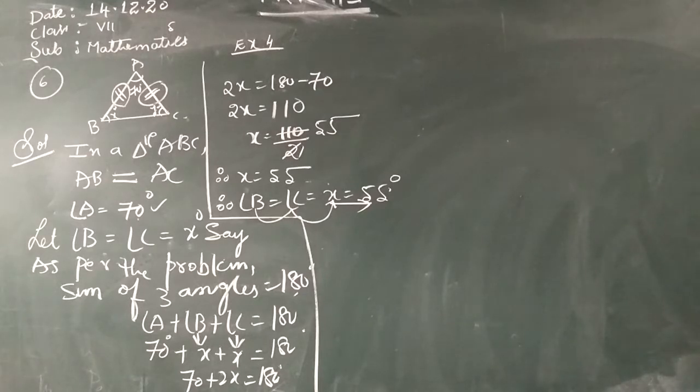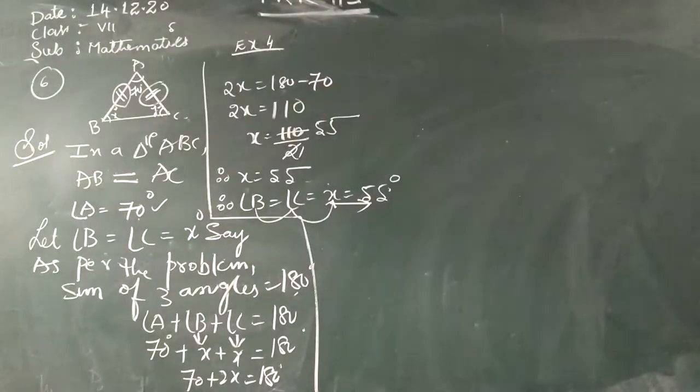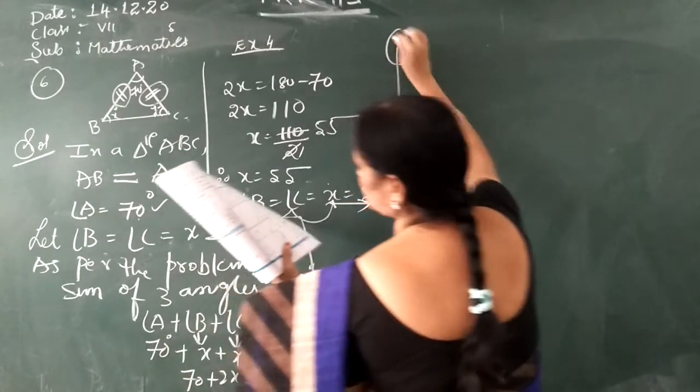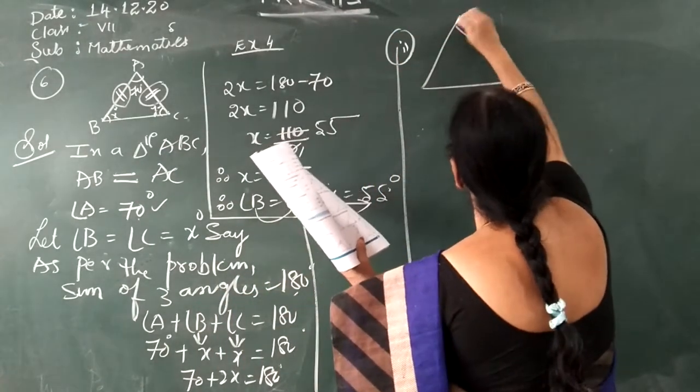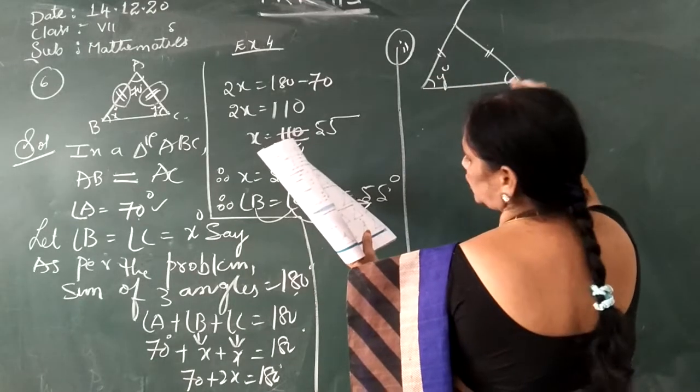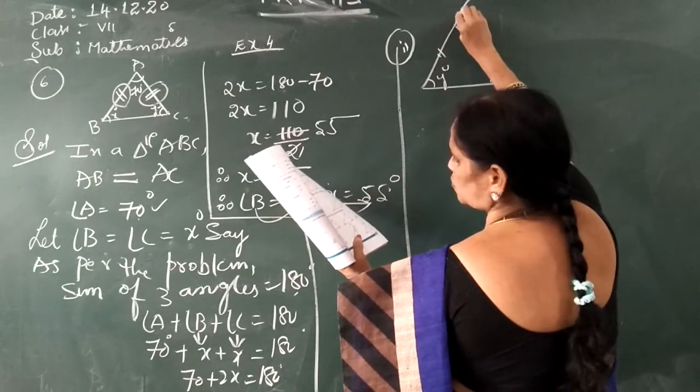I hope you all understood. The value of X is 55 and in the same way Y is also 55. Now here there is one more problem — the second problem. In this problem, one angle is given as 50 degrees and the other angle is X. Here the other angle is also X. The figure shows Y degrees, 50 degrees, and Y and X.